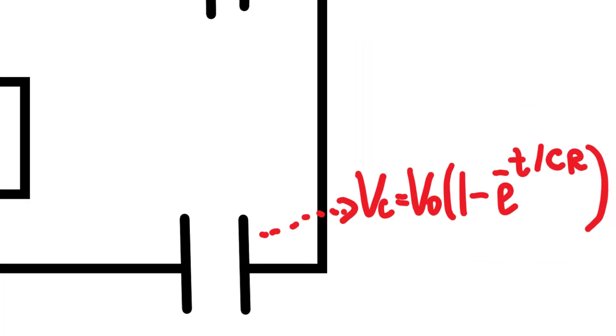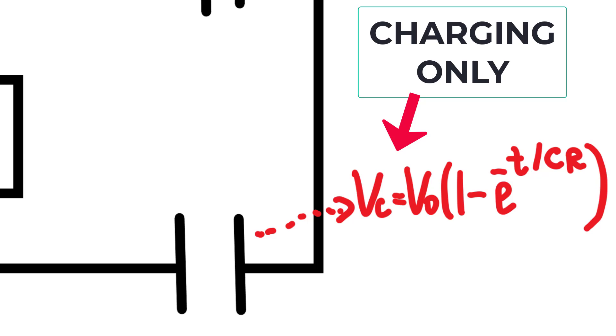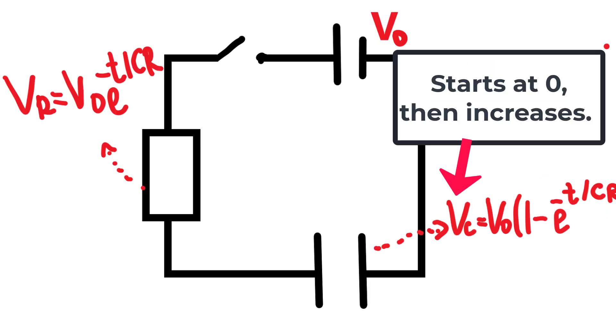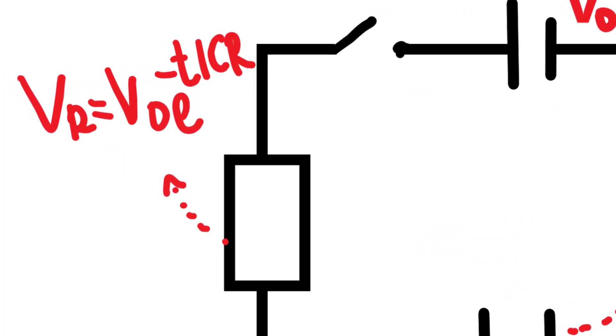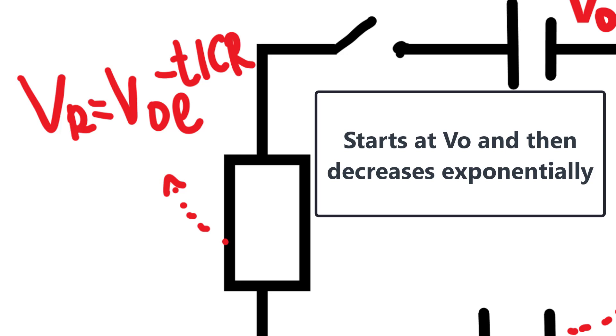Lots of people mix up the equation for the charging of a capacitor. Initially, the PD across the capacitor is zero and it is increasing, whereas the PD across the resistor is initially equal to the EMF and then it decreases exponentially.